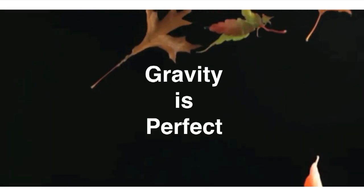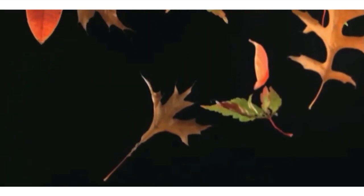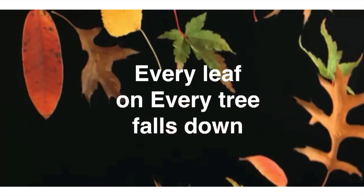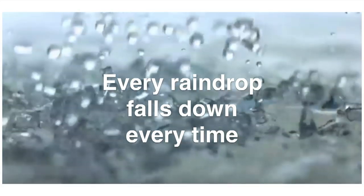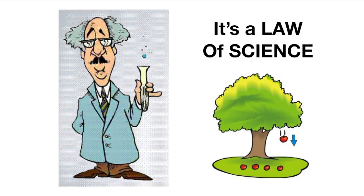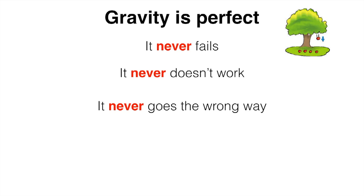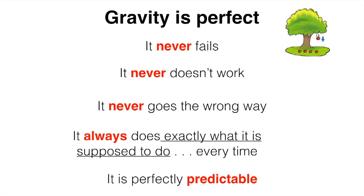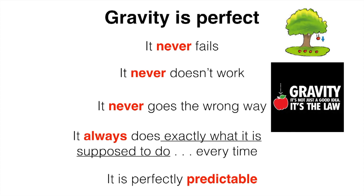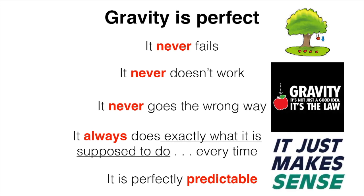Now you know that gravity is perfect. Every leaf on every tree falls down and every raindrop falls down every time. It's just simply a law of science, right? Gravity is perfect. It never fails. It never doesn't work. It never goes the wrong way. And it always does exactly what it is supposed to do every time. So you might call it perfectly predictable. So it's simply gravity is a law of science. And it simply makes sense.